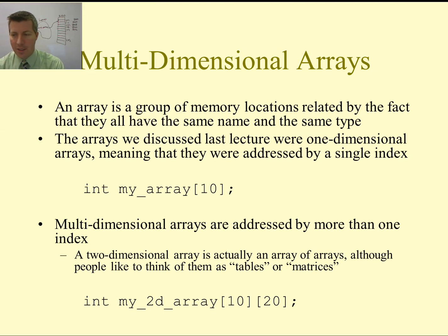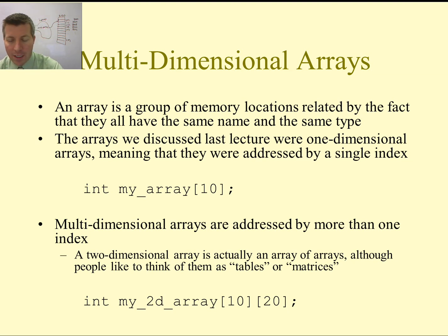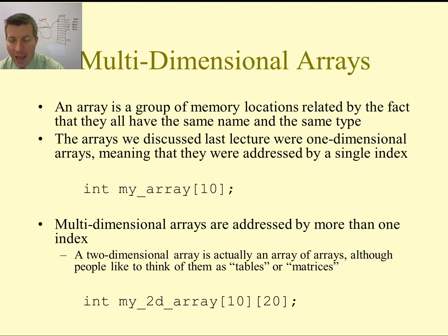That is a single-dimensional array, or a one-dimensional array. Today we're going to talk about multi-dimensional arrays. We can create an array of arrays, and that would be like a two-dimensional array. Down at the bottom I have int my2dArray with two indices instead of just one. When I have two of them, the number of elements is not just 10, which is the first number, but it's actually 10 times 20.